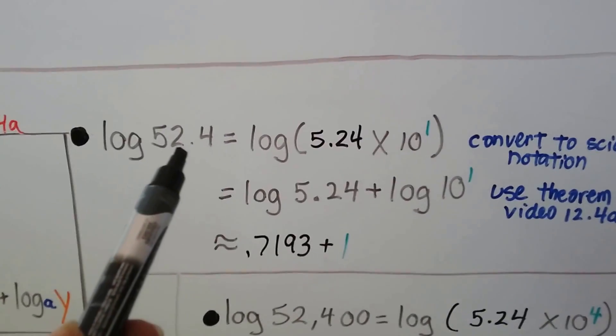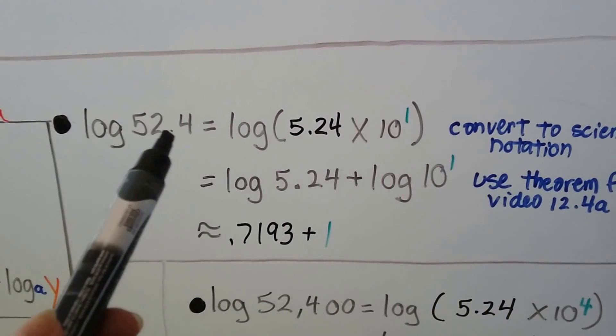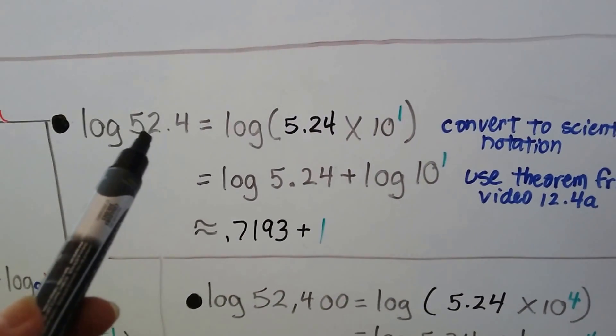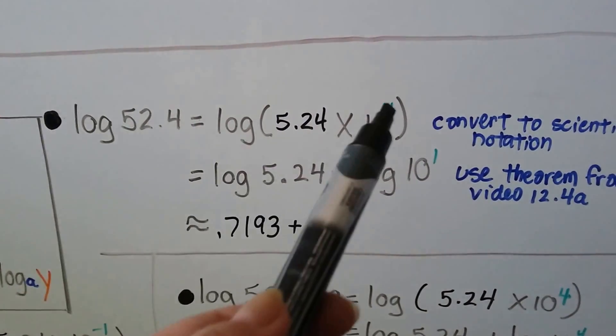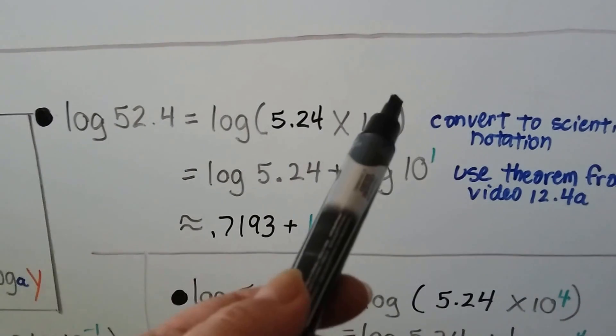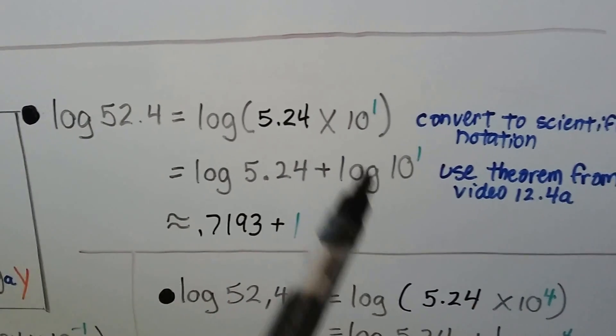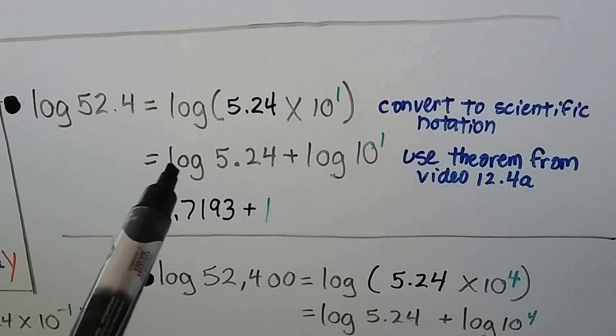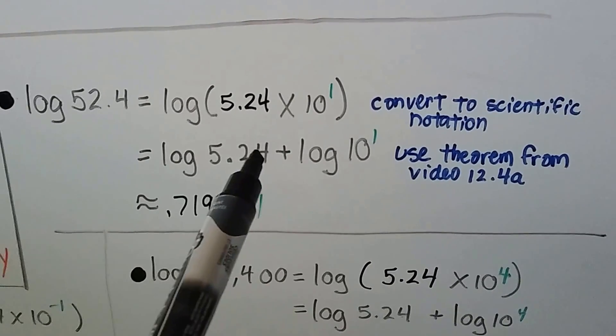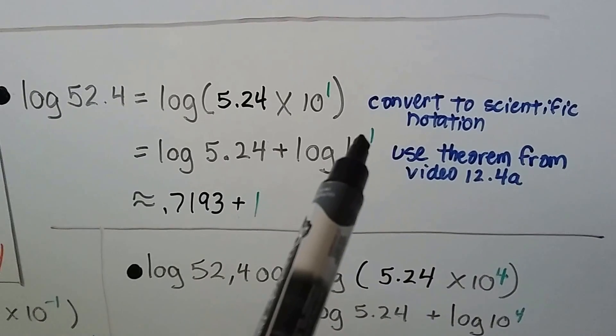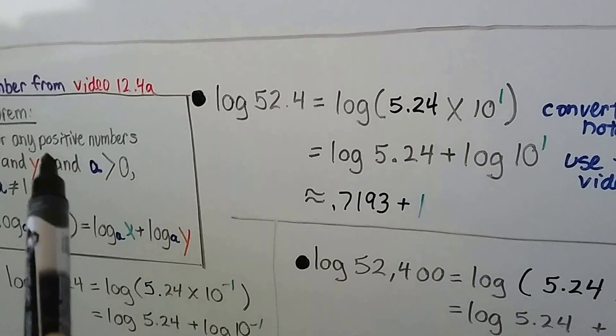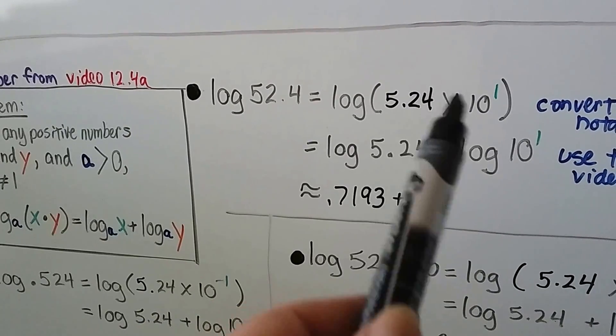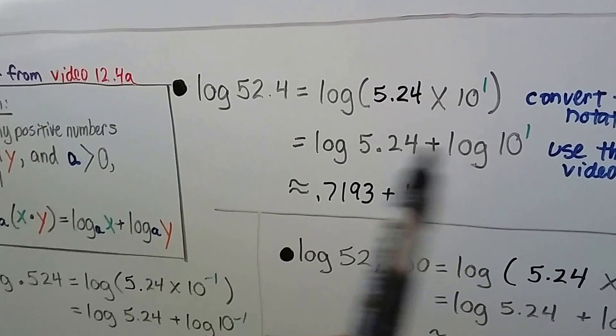Now we've got 52.4. So now we have to move the decimal point back to the left. So that means we're going to have 10 to the 1, 10 to the first power, because we're going to the left with that decimal point for scientific notation. That means we've got log 5.24 plus log 10 to the first power using this theorem. So this multiplication ends up becoming plus.